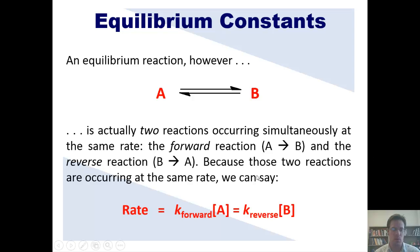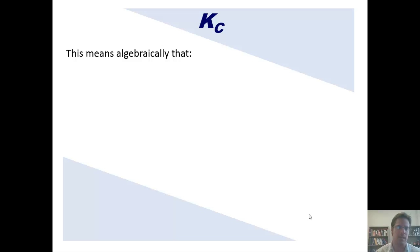Now because those two reactions are occurring at the same rate, we can actually say that the rate law of the forward reaction is equal to some constant, K, multiplied by the concentration of A, and that rate is also equal to some rate constant, K, of the reverse reaction multiplied by the concentration of B. In other words, I've got two reactions. Hopefully that makes sense. So this means algebraically that the concentration of B divided by the concentration of A is equal to K forward divided by K reverse. Now if you don't believe me, please pause the video, go back to the previous slide, and see if you can rearrange the terms I just showed you to make sure that this makes sense. You should find that they indeed do.